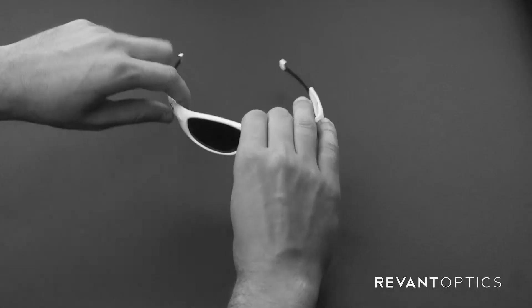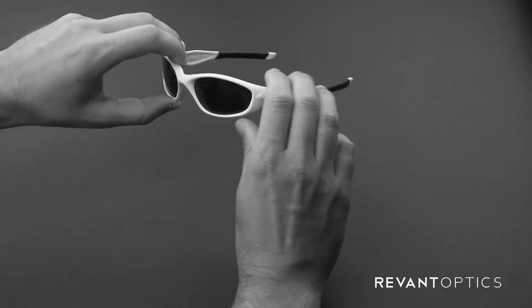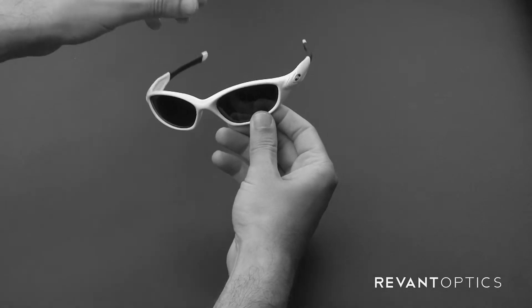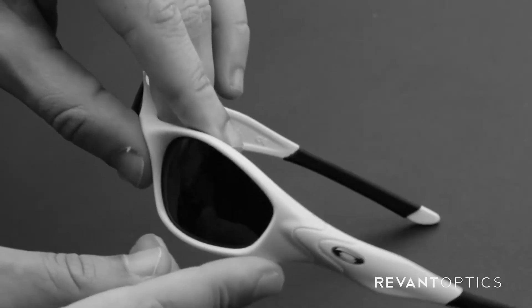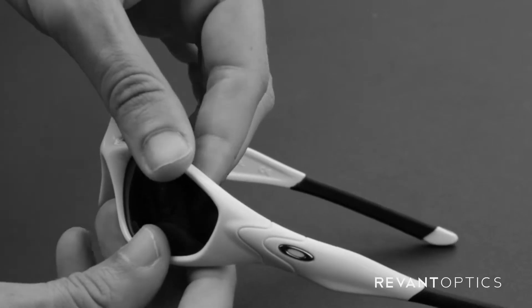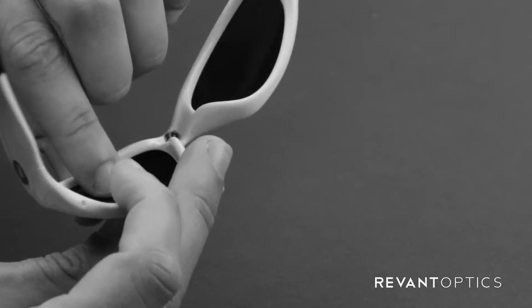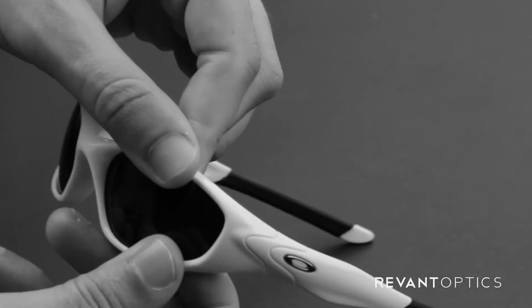This is a plastic frame, the updated version of the 1.0. The easiest way to remove lenses is to pull up on the top edge of the frame and pull down on the bottom, then push on the back side of the lens to pop it out the front side of the frame.